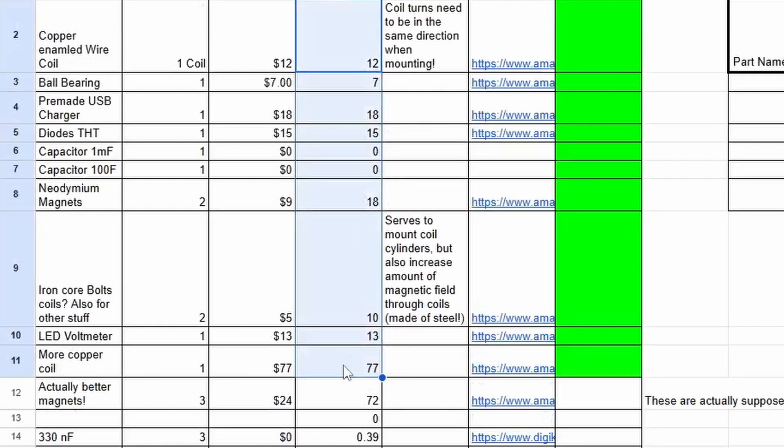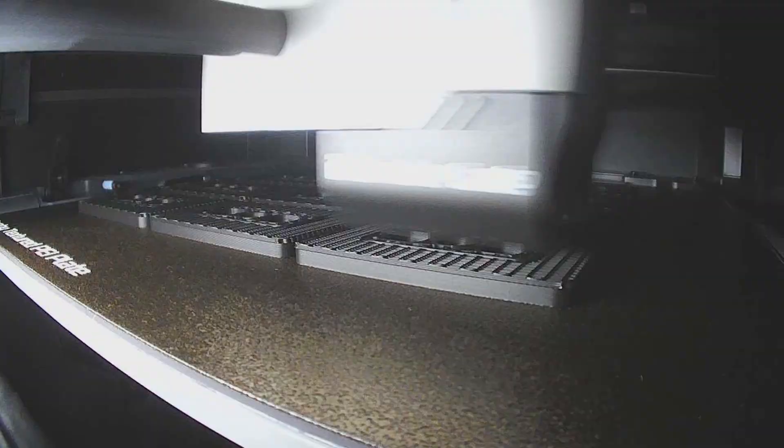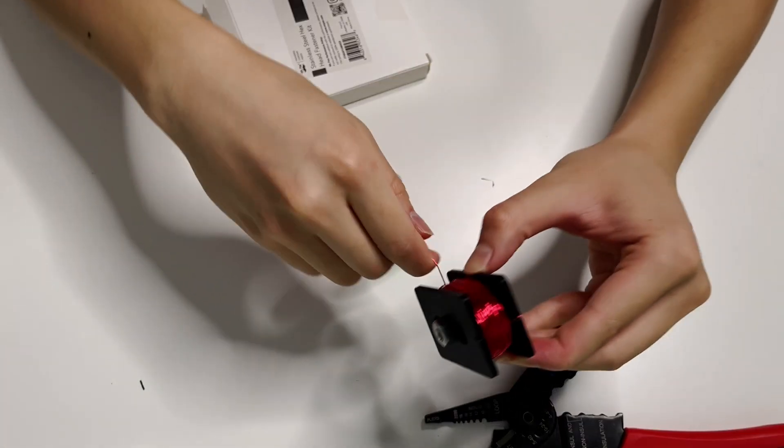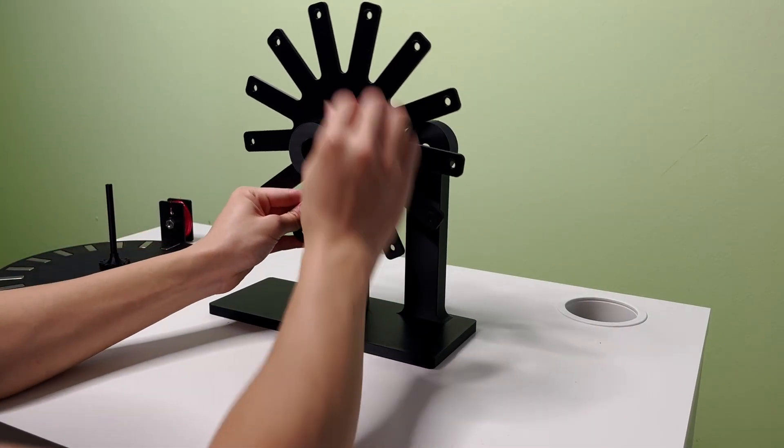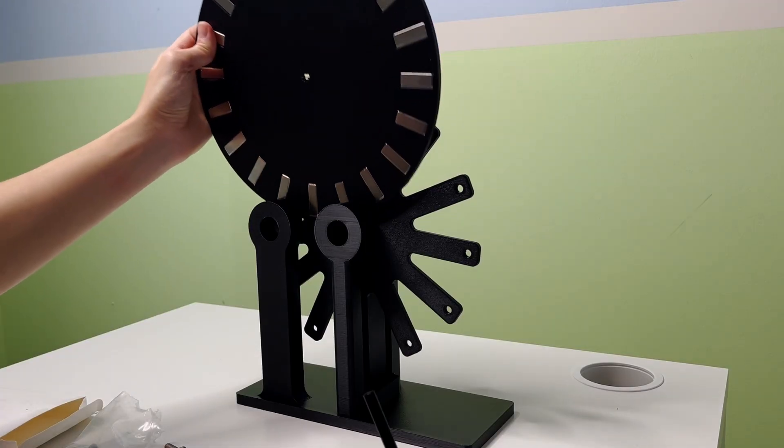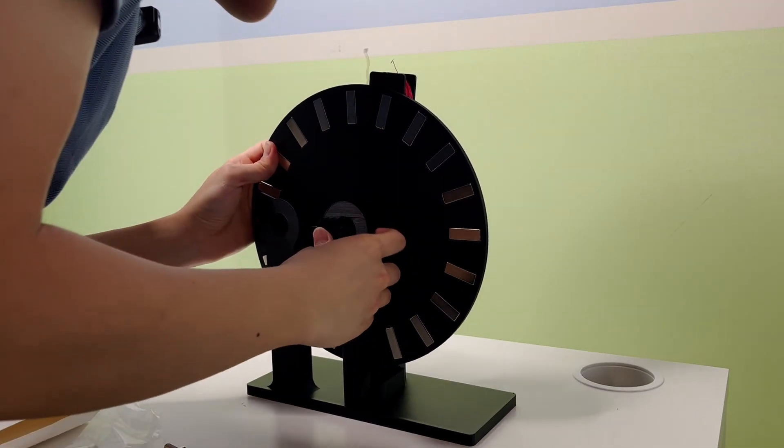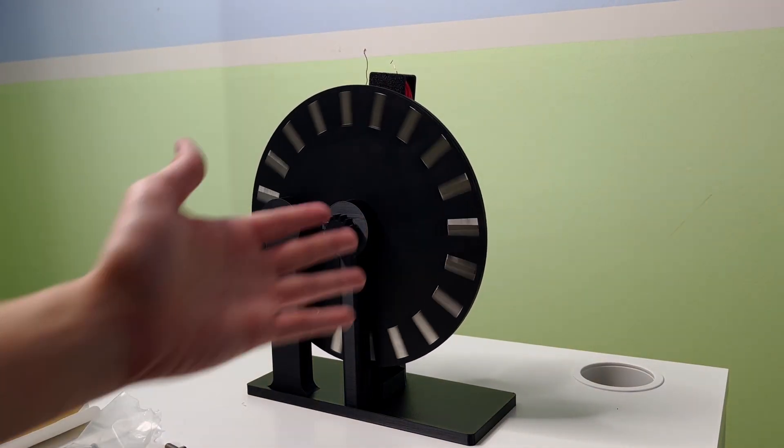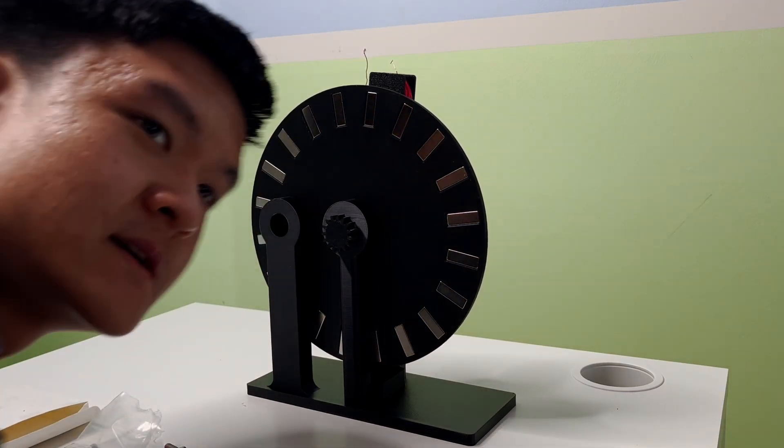So I bought the parts. Kind of expensive, but fortunately I'm sponsored by PCBWay. More on them later. I assembled the parts for the first test, which hopefully would create more voltage than my little experiment. So I can screw in, it's threaded. Oh, this is going to be a pain, I can kind of tell. Oh wait, I need the ball bearings. We got our Ferris wheel of death right here. It's going to create a lot of electricity and we're all going to die.